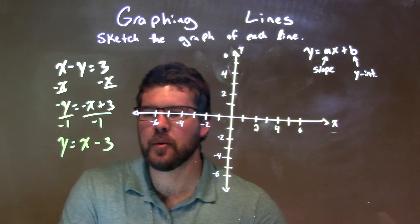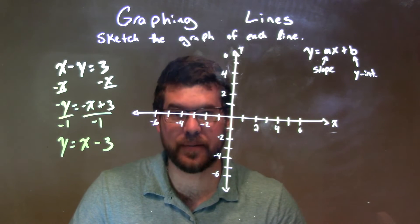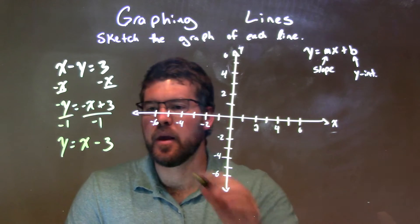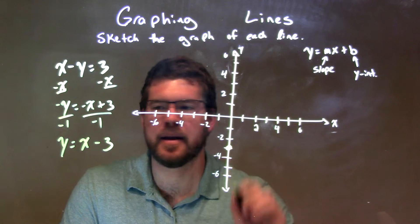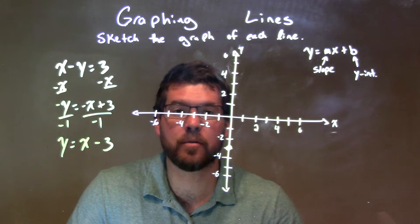So now we have y equals x minus 3. Negative 3 is our y-intercept across the y-axis right here at that negative 3, and our slope is 1.